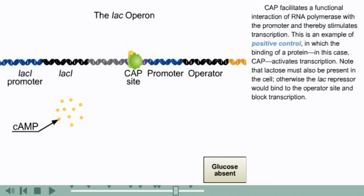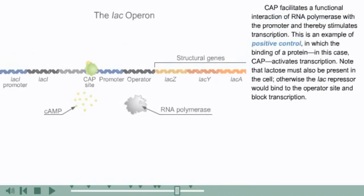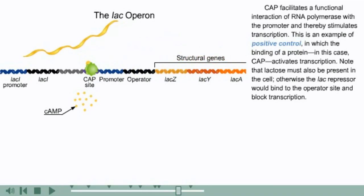CAP facilitates a functional interaction of RNA polymerase with the promoter and thereby stimulates transcription. This is an example of positive control, in which the binding of a protein, in this case CAP, activates transcription. Note that lactose must also be present in the cell. Otherwise, the lac repressor would bind to the operator site and block transcription.